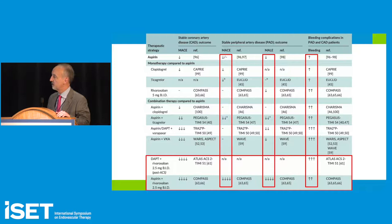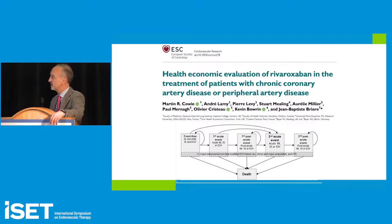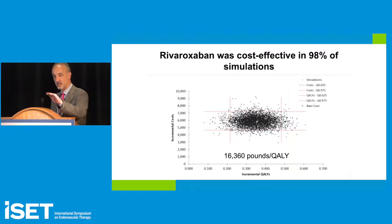This is where we've landed in terms of anticoagulation therapy in PAD patients. There is also a health economic benefit — a Markov model analysis conducted in England showed the strategy is well within the 30,000-pound quality-adjusted life year threshold, making it cost-effective as well as clinically effective.